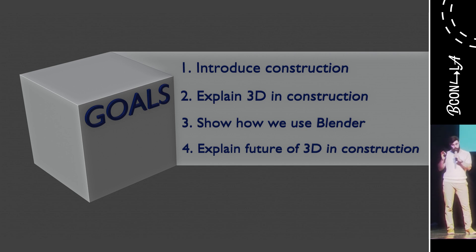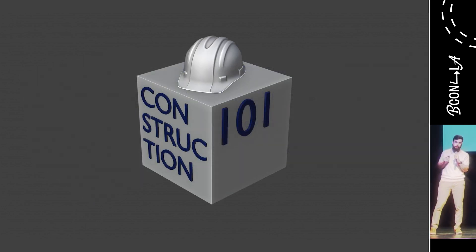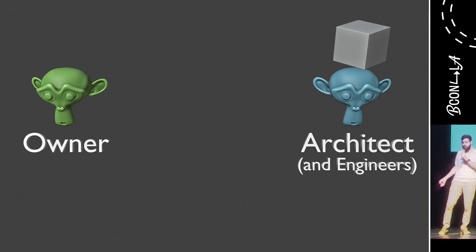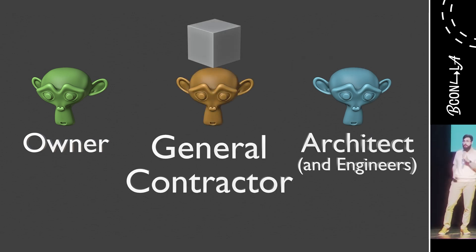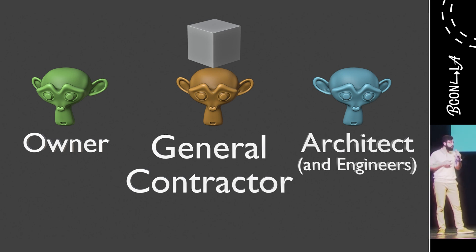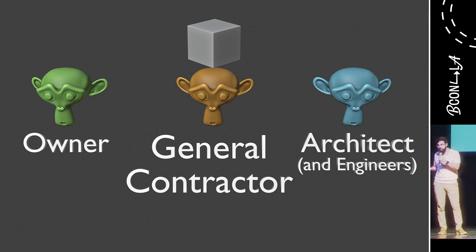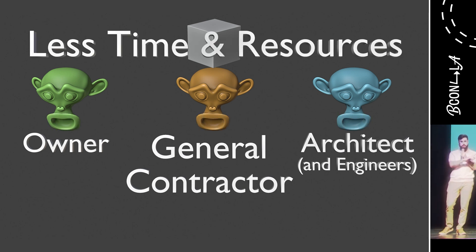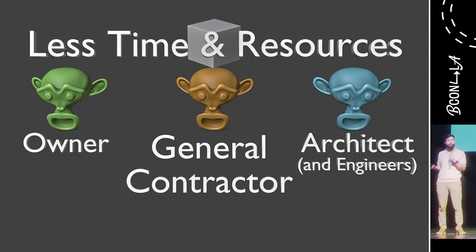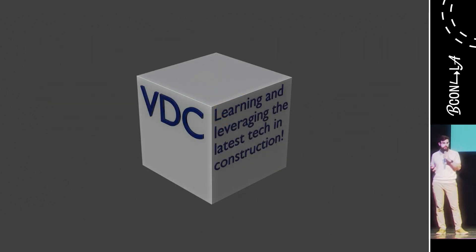Now we don't have a ton of time, so these first two goals we're going to speed run. Starting off with Construction 101: on a typical construction project there are three main parties involved. You have the owners, you have the architects and engineers who are designing the form and the function of the project, and you have the general contractors — that's us — they mobilize a team of construction professionals to build the project. The owners are funding, the architects and engineers are designing, and the general contractor is building. All these people have a vested interest in building the project more efficiently, meaning using less time and less resources, and that's what our department is trying to do by learning and leveraging the latest technology in construction.